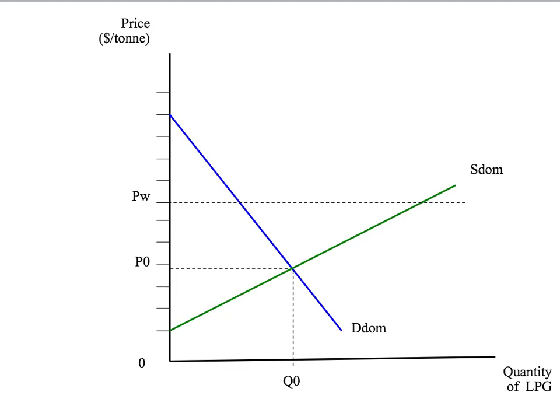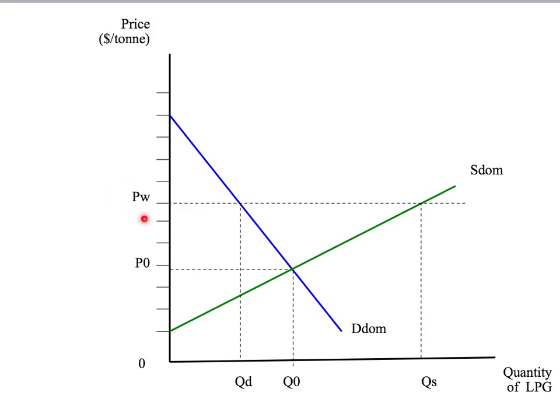But what does that do? My claim is the following. If the world price is above the domestic price as we've got here, then that's going to lead to a higher domestic price. The domestic price will go up to the world price. Given the domestic demand curve, that's going to mean that domestic consumers will buy less LPG. But given the domestic supply curve, the higher price will mean that domestic suppliers will want to sell more LPG. The difference between the amount sellers want to sell QS and the amount buyers want to buy QD is going to be the amount that we sell overseas. So this gap here, this difference, is going to be the amount of LPG that Australia exports.